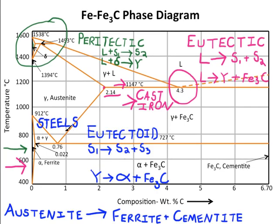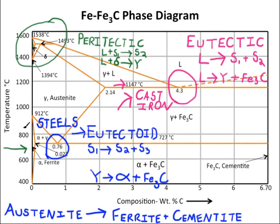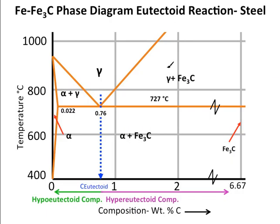The third reaction on the iron-iron carbide phase diagram is the eutectoid reaction. It is when solid one cools into solid two plus solid three. In this case, gamma cools down into alpha plus iron carbide — or austenite cools into ferrite plus cementite. This video focuses on the eutectoid reaction because steels are found in the compositional vicinity of this reaction, and there are many applications for steels.